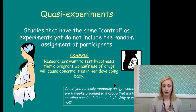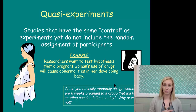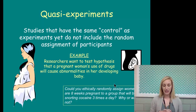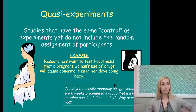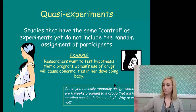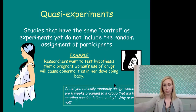For example, researchers want to test the hypothesis that a pregnant woman's use of drugs will cause abnormalities in her developing fetus. In a true experiment, you would get pregnant participants, split them into experimental and control groups, and give the control group a placebo while the experimental group receives actual crack cocaine. Obviously, you cannot do that.